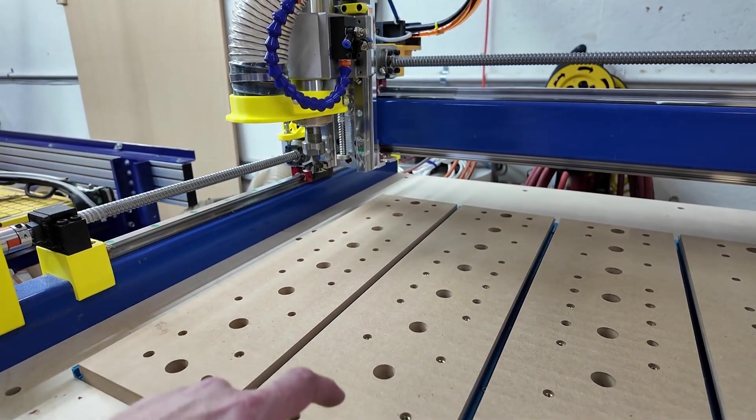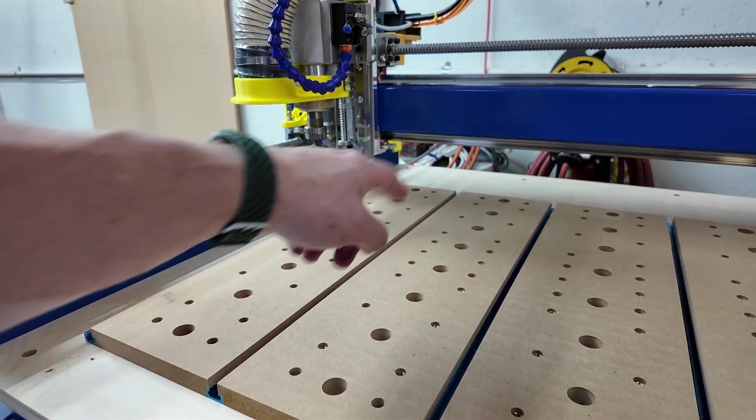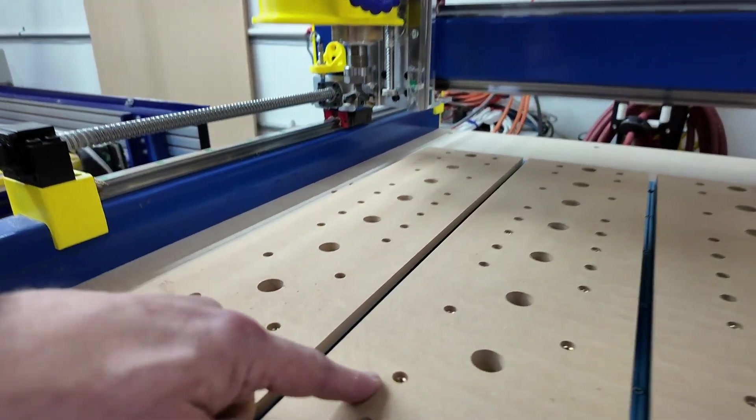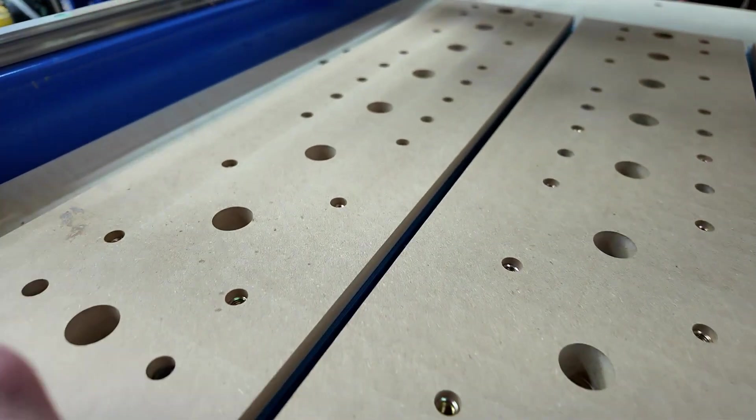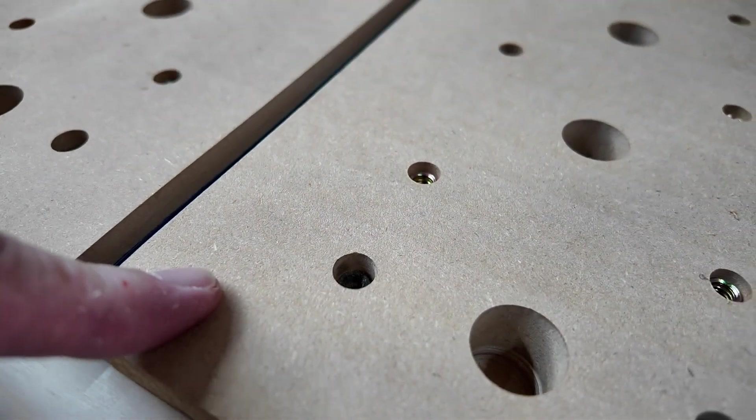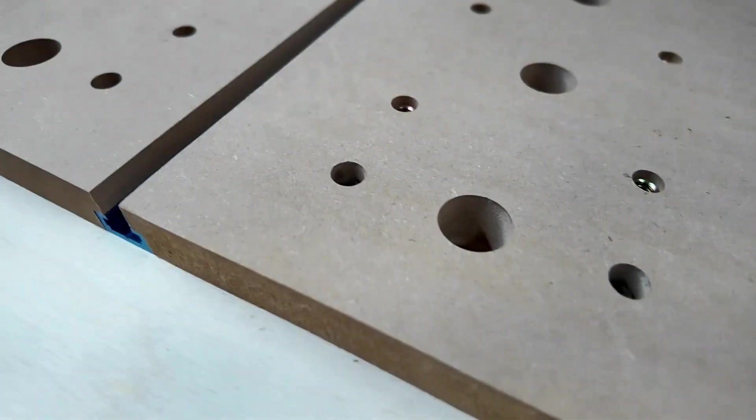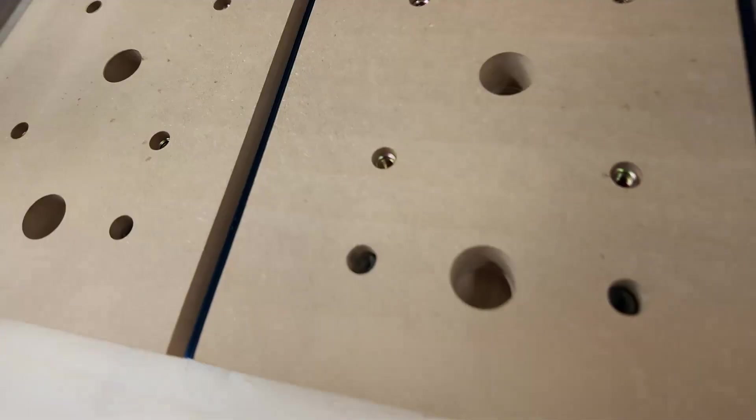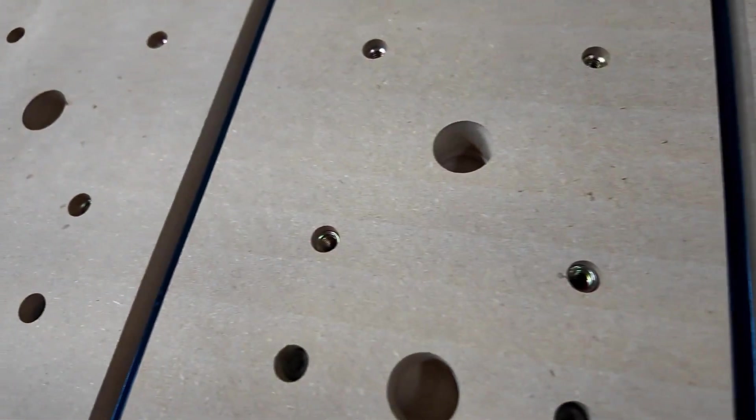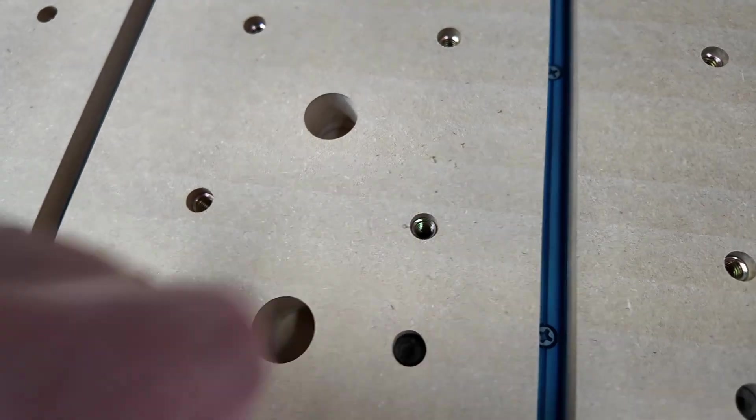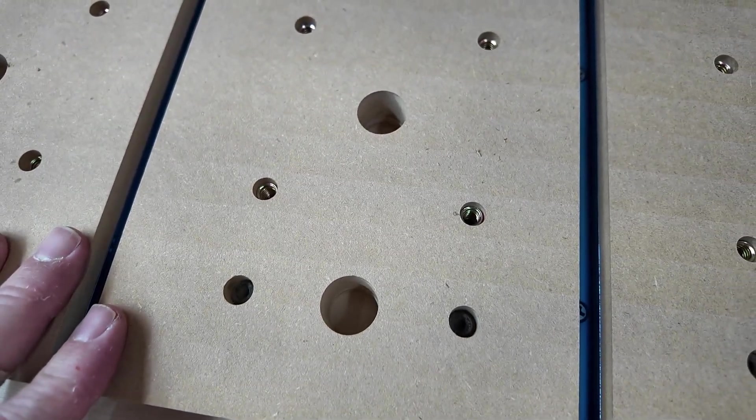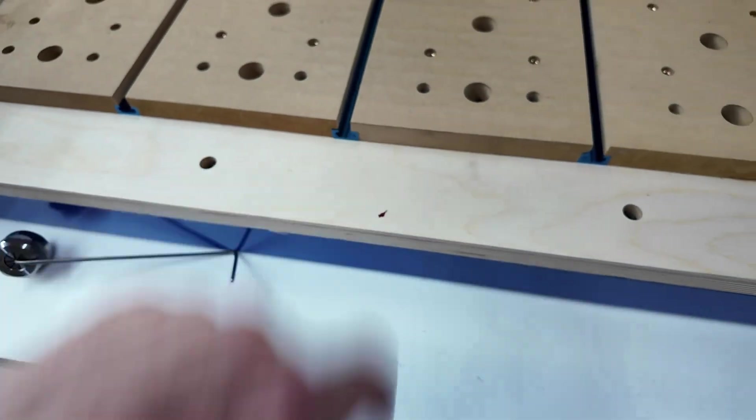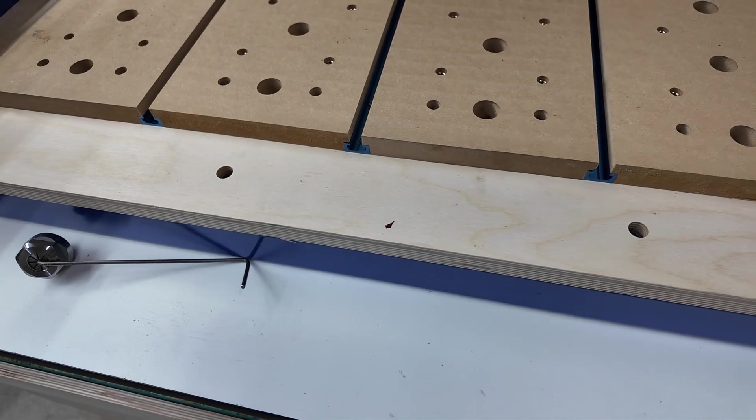And then we've got a series of dog holes running in the center. And then surrounding each one of those dog holes is four threaded inserts. These are threaded inserts. They're M6 for whatever kind of fixturing I want to do. And then there is also a T-track for whatever fixturing I want to do.